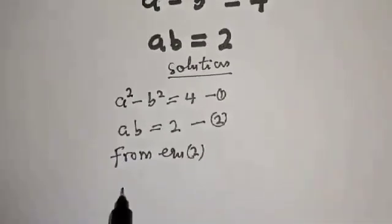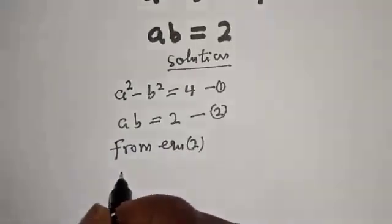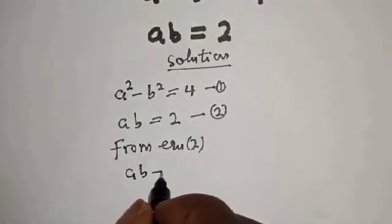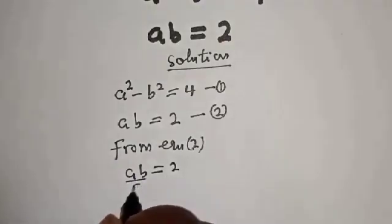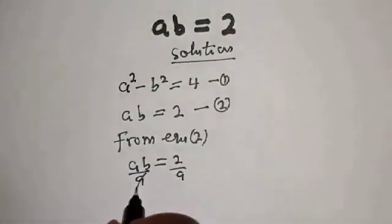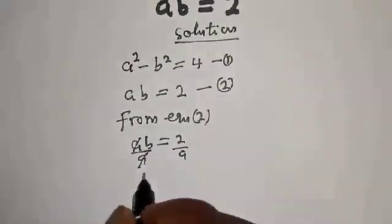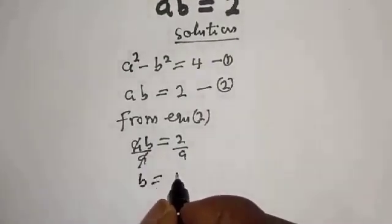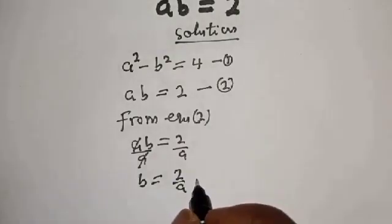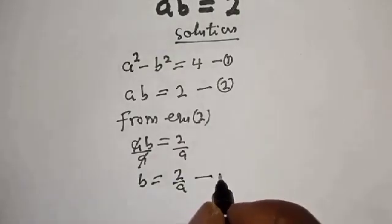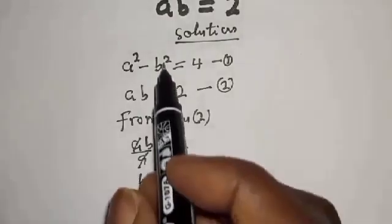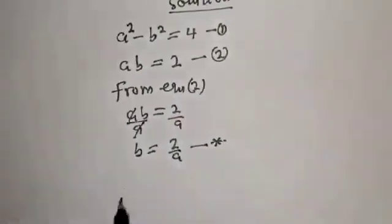From equation 2, let's make b the subject of the formula. ab equals 2; dividing both sides by a gives b equals 2 over a. Let's call this equation star.